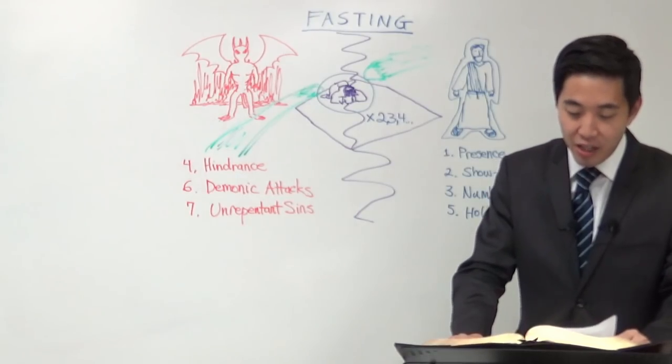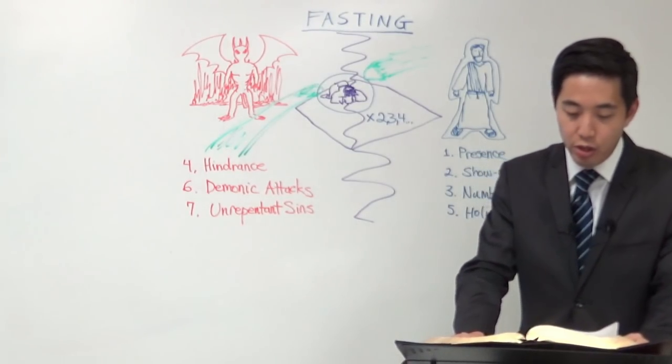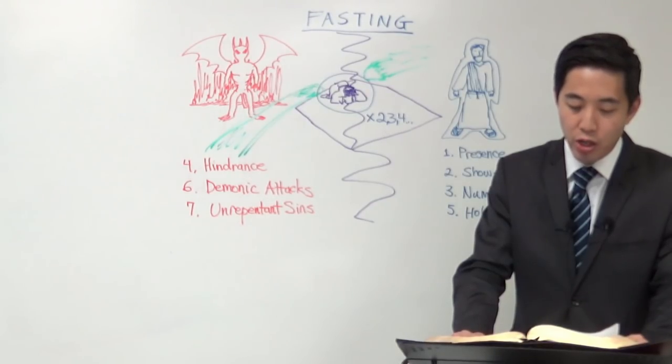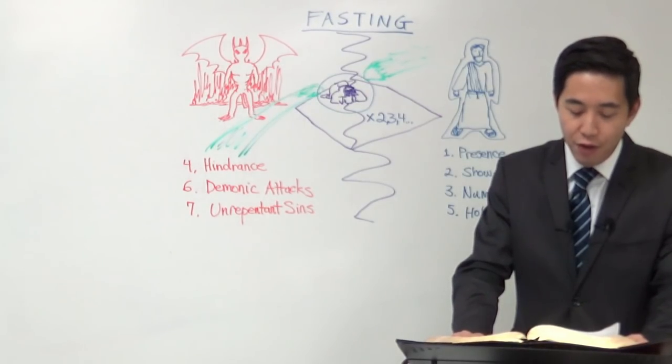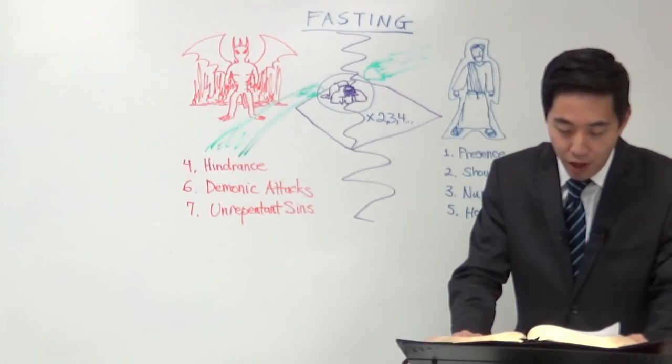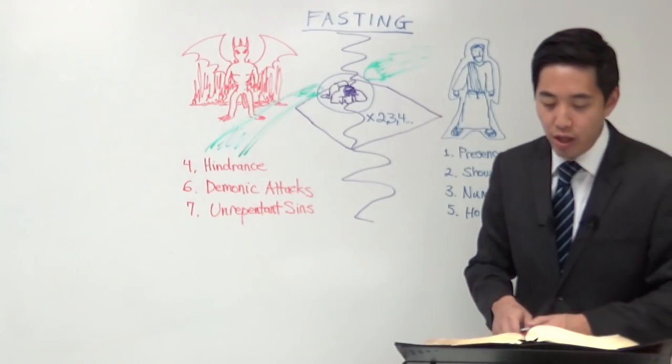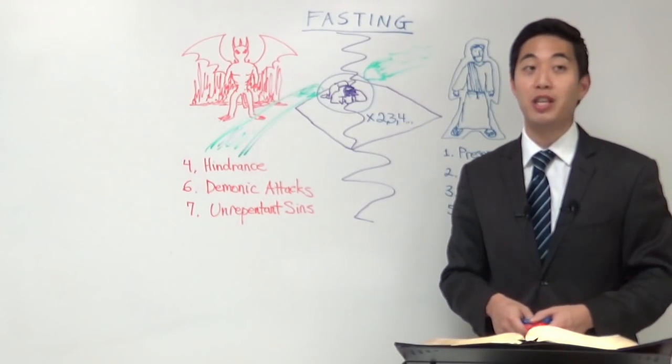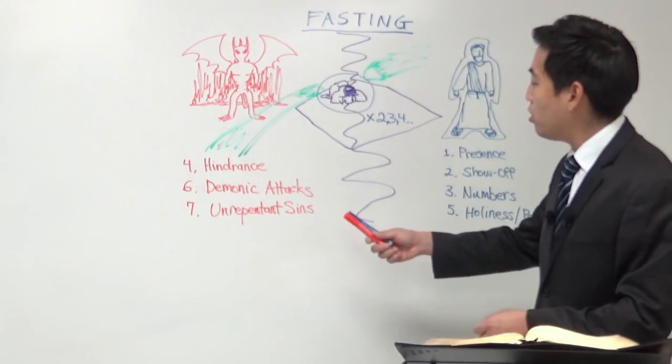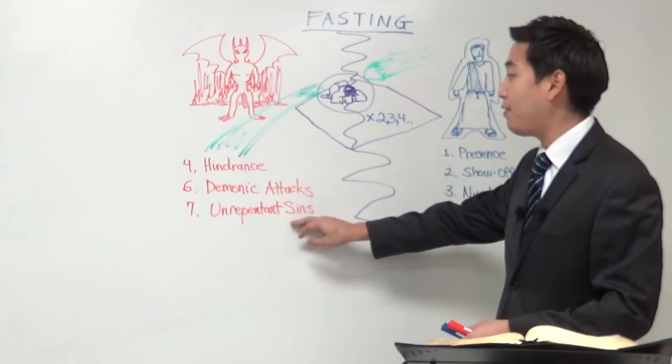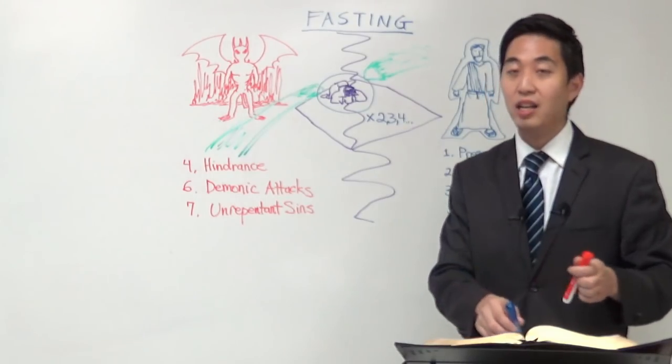Because that exorcist's quote-unquote power can be even weaker compared to prayer and fasting. Look, the disciples couldn't cast out the devil. So what did Jesus say? Look at Mark chapter 9, verse 28. When he was coming to the house, his disciples asked him privately, why could not we cast him out? See that their exorcism quote-unquote failed. Verse 29, he said unto them, this kind can come forth by nothing, but by prayer and fasting. So that's important under demonic attacks, you need to combine prayer and fasting.